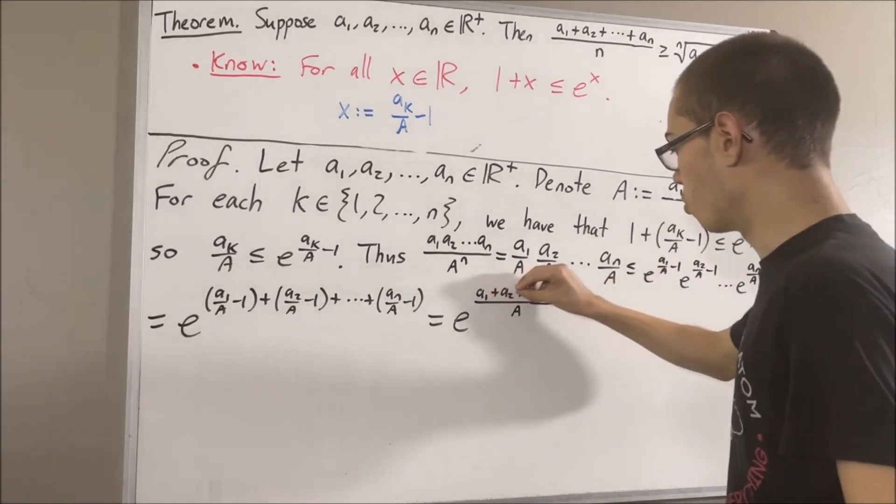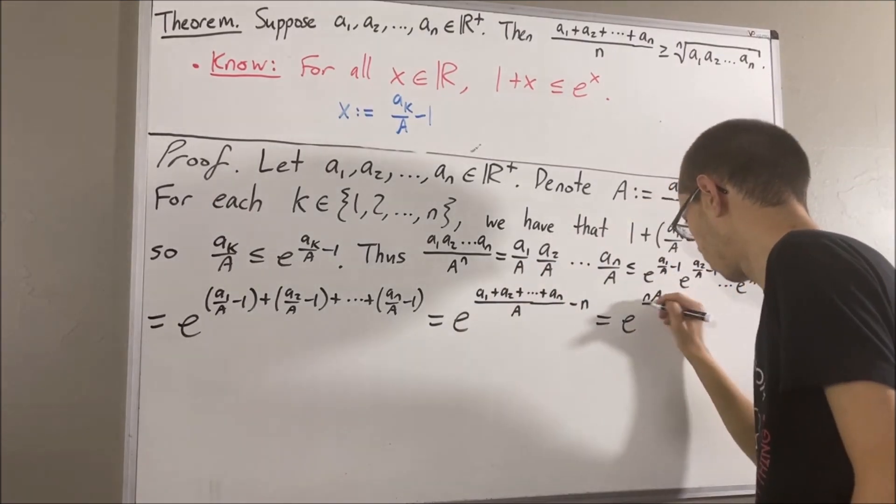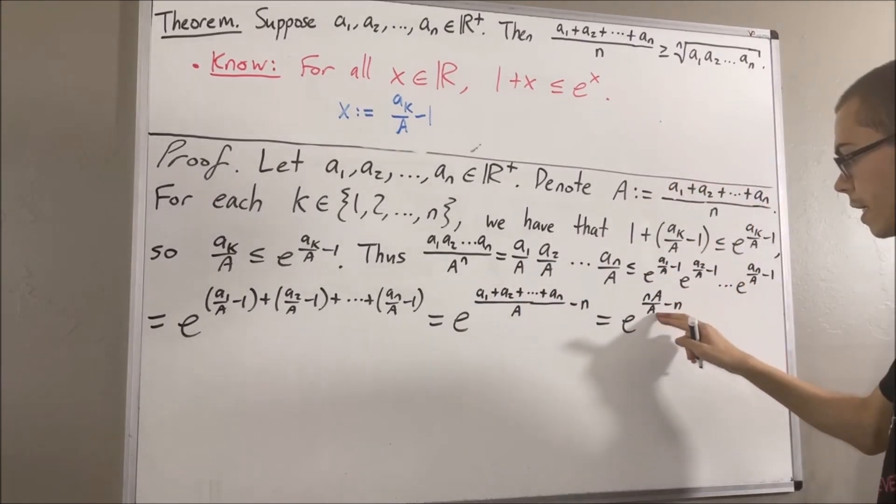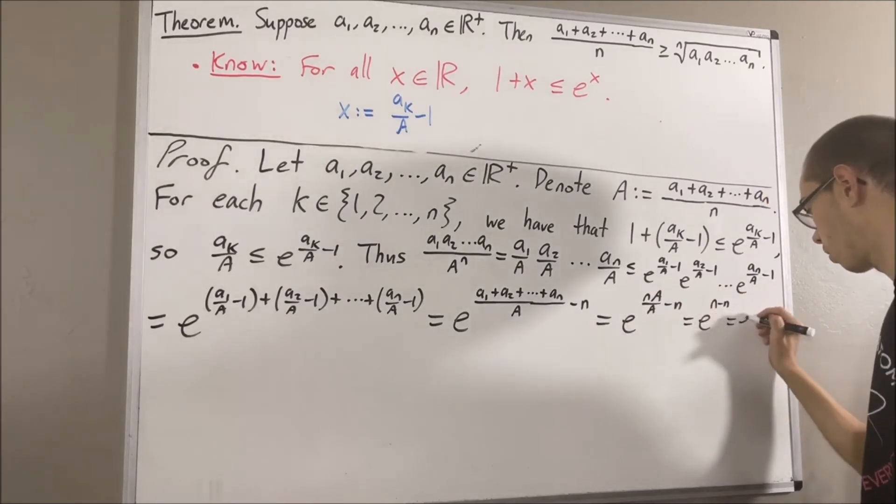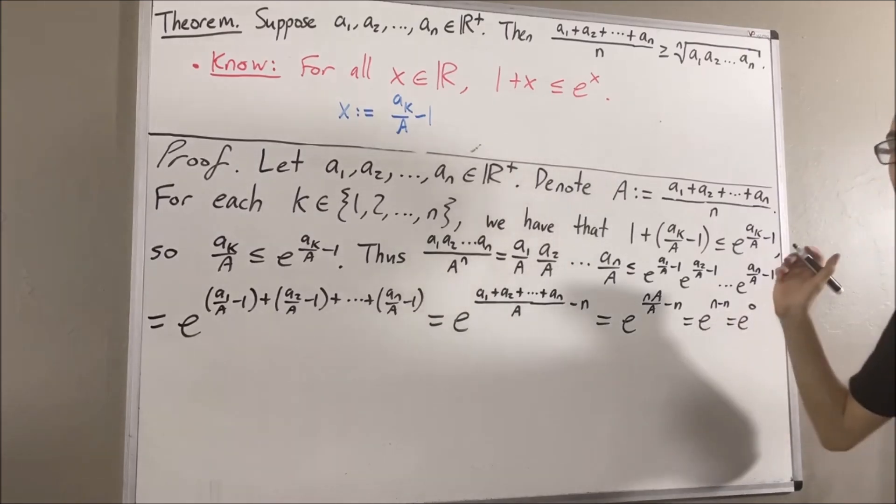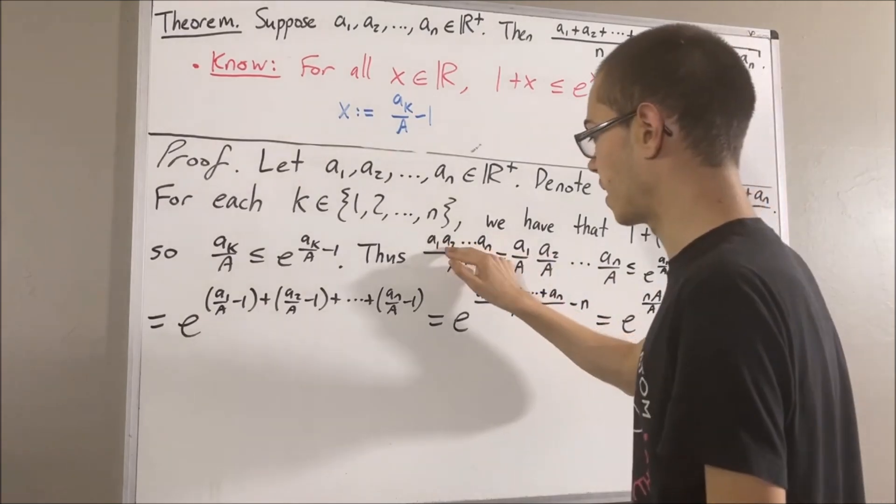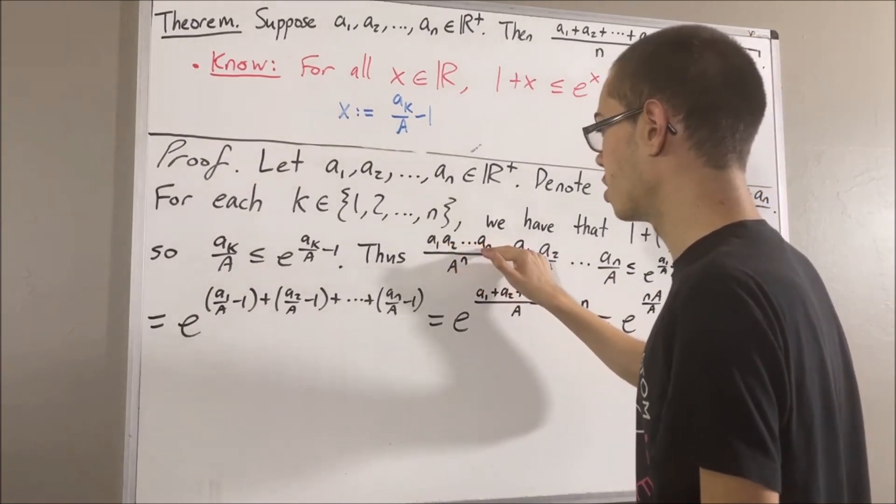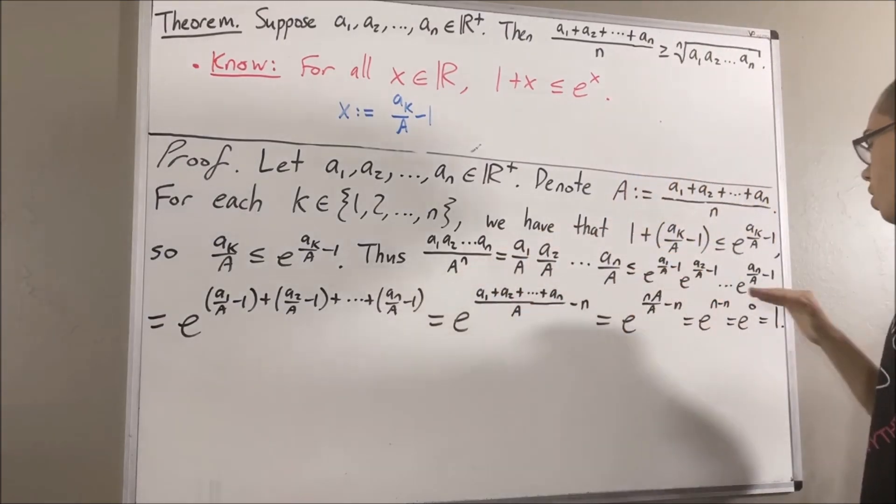Well, the capital A's cancel out, so we're left with n minus n. n minus n is equal to 0, and e to the power of 0 is equal to 1. So, we have shown that a1 times a2 times dot dot dot times an over capital A to the power of n is less than or equal to 1.